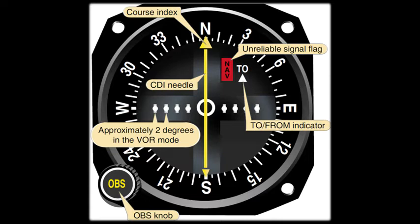The CDI needle is also called the course deviation needle. If the CDI needle moves to the left or right of the desired course, you fly left to intercept it. Each dot that you see on the needle represents 2 degrees. When the needle is centered, you are directly on the selected course.